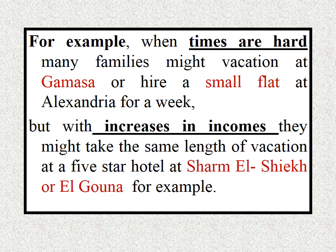المثال اللي كنت بقوله: When times are hard, many families might vacation at Gamsa or hire a small flat at Alexandria for a week. With increases in income, they might take the same length of vacation at a five-star hotel — خلي بالك five-star من غير S — at Sharm El-Sheikh or Al-Gouna. لأن معاهم فلوس كتير فبالتالي بيبدلوا الأجازة الرخيصة بأجازة غالية.